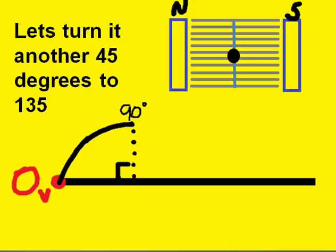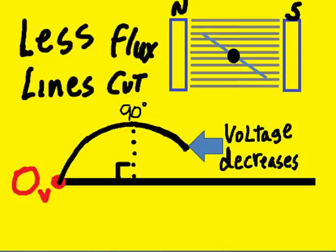Let's turn it another 45 degrees to 135. Less flux lines are cut and voltage decreases.